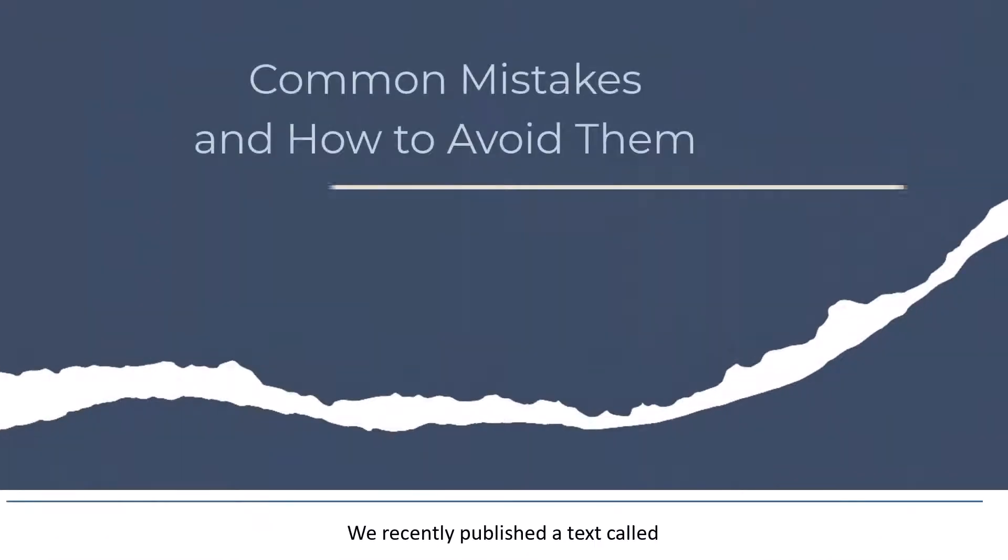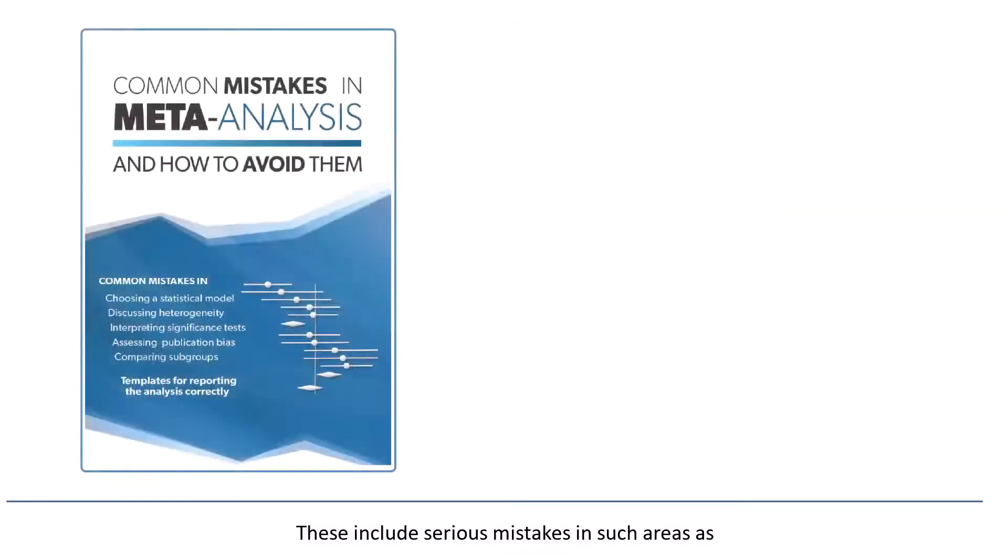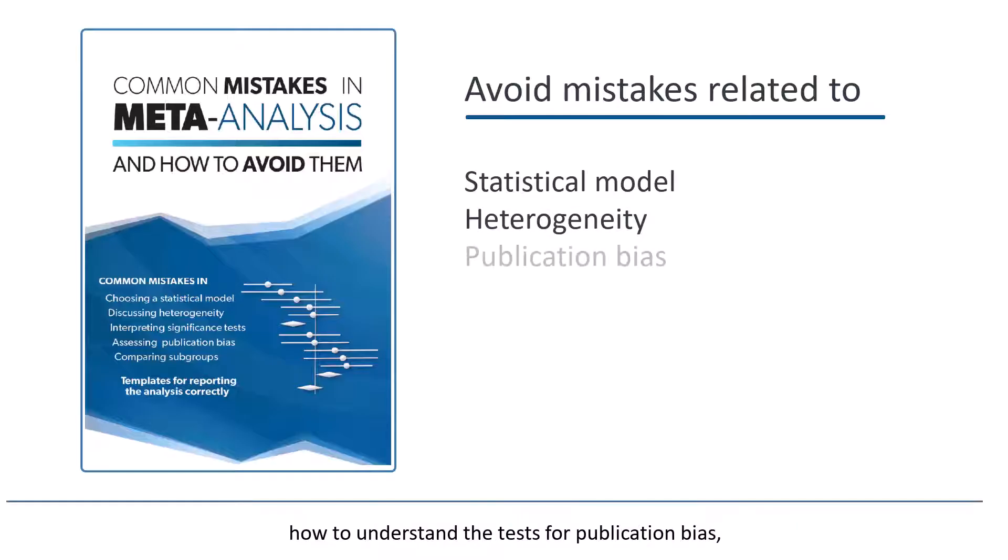We recently published a text called Common Mistakes in Meta-Analysis and How to Avoid Them. These include serious mistakes in such areas as how to choose a statistical model, how to report heterogeneity, how to understand the tests for publication bias, how to interpret subgroup analyses, among others. From any module in the program, you can access the relevant parts of this text, learn what the mistakes are, and how to avoid them in your analysis.